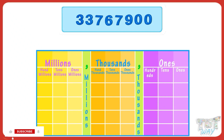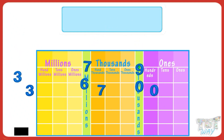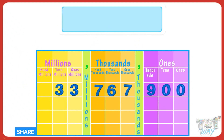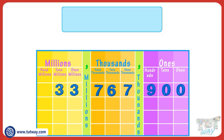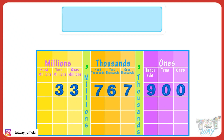Now let's read an eight digit number. Here we have the number. First write it below the place value chart starting from the ones place.